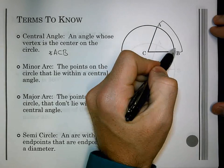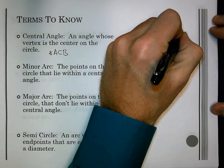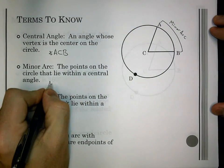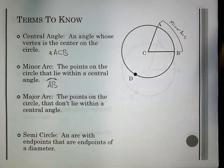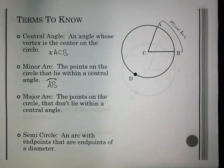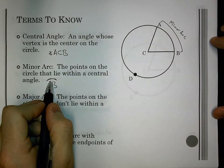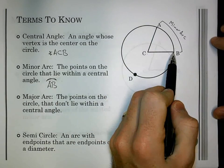Now, I have a minor arc there with ACB, and we call a minor arc, it's the points on the circle that lie within the central angle. So, our angle hits the circle at points A and B. The minor arc is all the points between A and B. So, whenever you write this or identify it, it's going to be AB, and we put a little arc symbol above it.